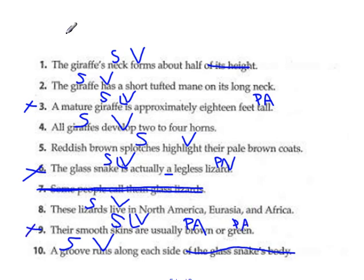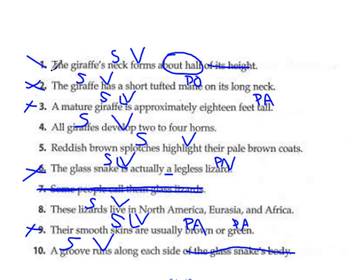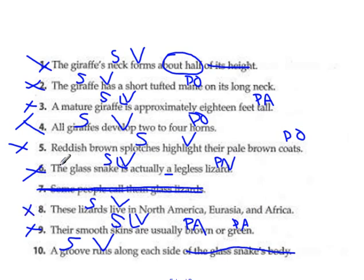All right, now we're looking for the action verbs. The neck forms what? This doesn't tell us what the neck forms — 'about half' is a prepositional phrase, so I'm not going to throw one like that at you because it's a pretty tough prepositional phrase. Number 2, the giraffe has what? A mane — that's your DO. To or for whom? Nothing. The giraffes develop what? Horns — to or for whom? Nothing, so there's your DO. The splotches highlight what? The coats — to or for whom? Nothing. Lizards live what? 'In North America, Eurasia, and Africa' tells us where they live, not what they live, so there's nothing. A groove runs what? 'Along each side' tells us where it runs, not what it runs, so there's no DO in that one either.